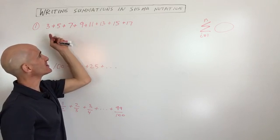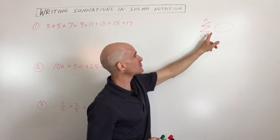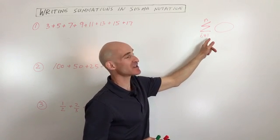What we want to do is we want to write this summation, the sum of all these numbers in a more compact form, and that's what we call the sigma notation. This Greek letter here, sigma.